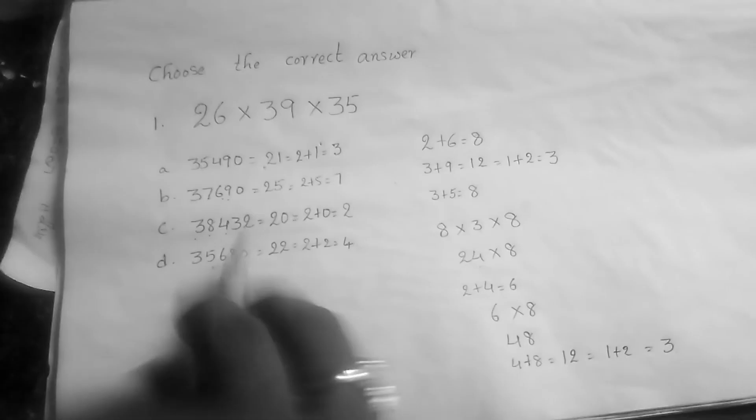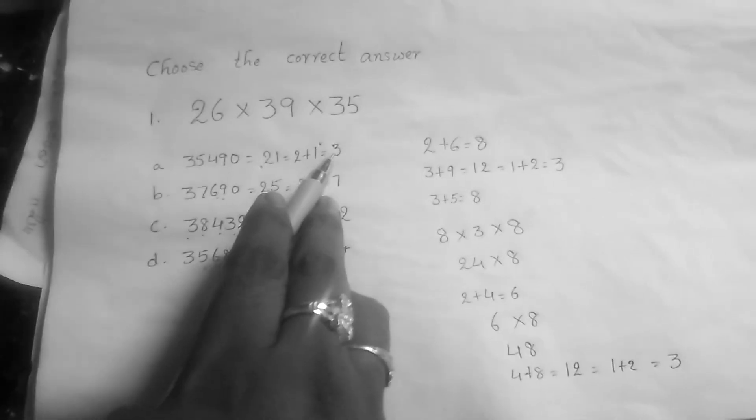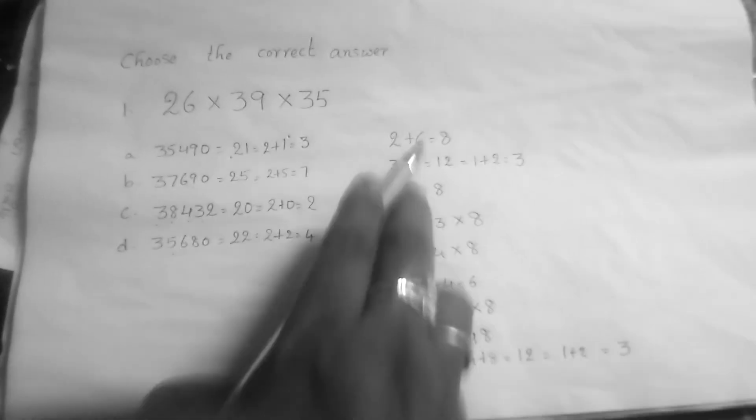You have to observe here in the options where we get 3. When we get the multiplication result in those options, we also get 3 at the end. So this is the correct answer.